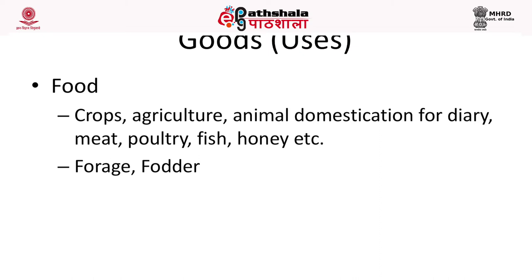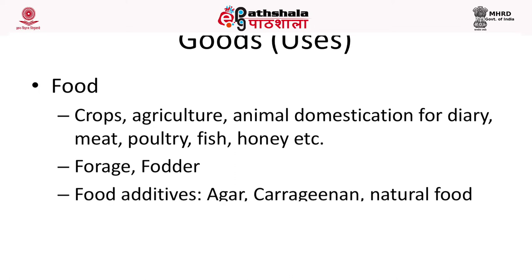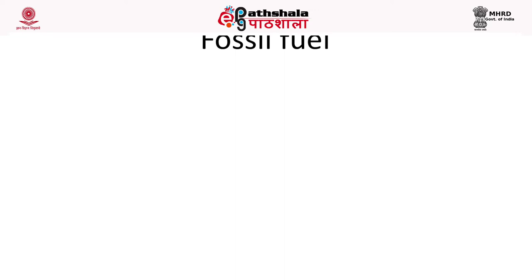Food additives — a number of food additives are obtained from natural resources. For example, agar or carrageenan are obtained from seaweeds. Natural food colorants, natural food preservatives — all these are commodities obtained from global biodiversity.